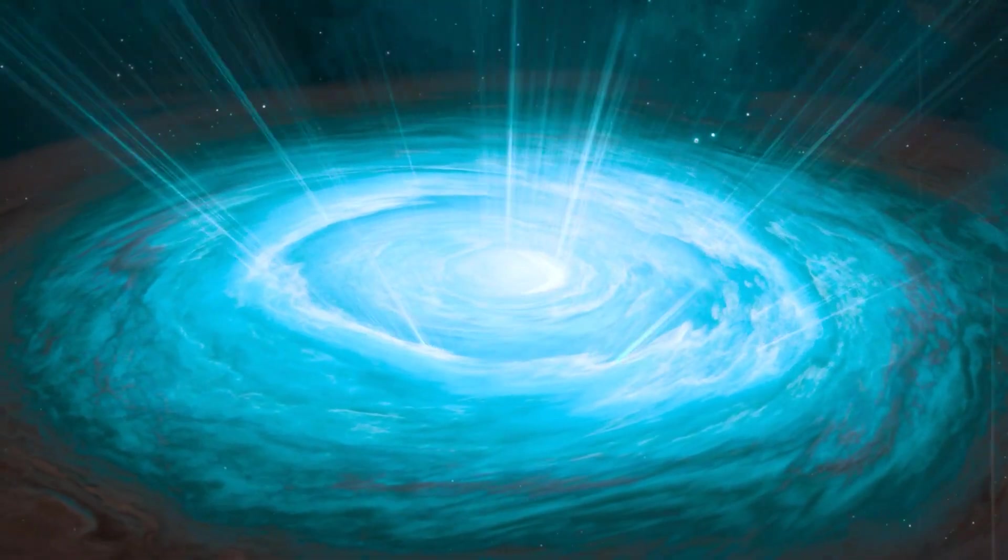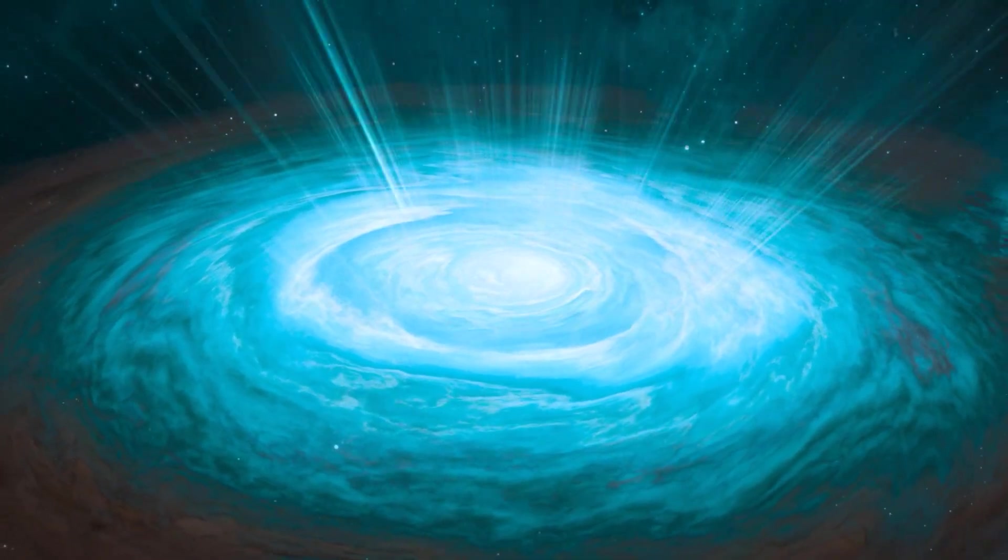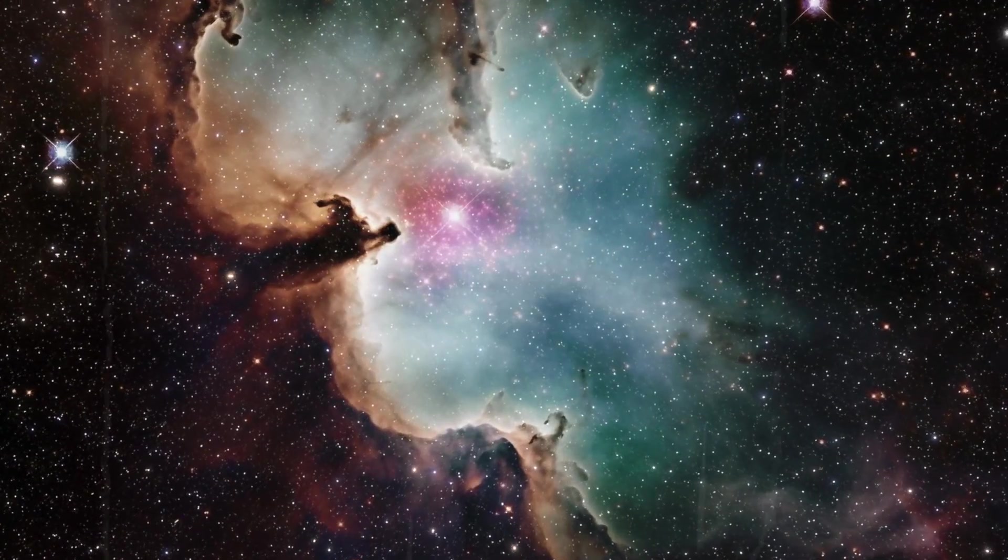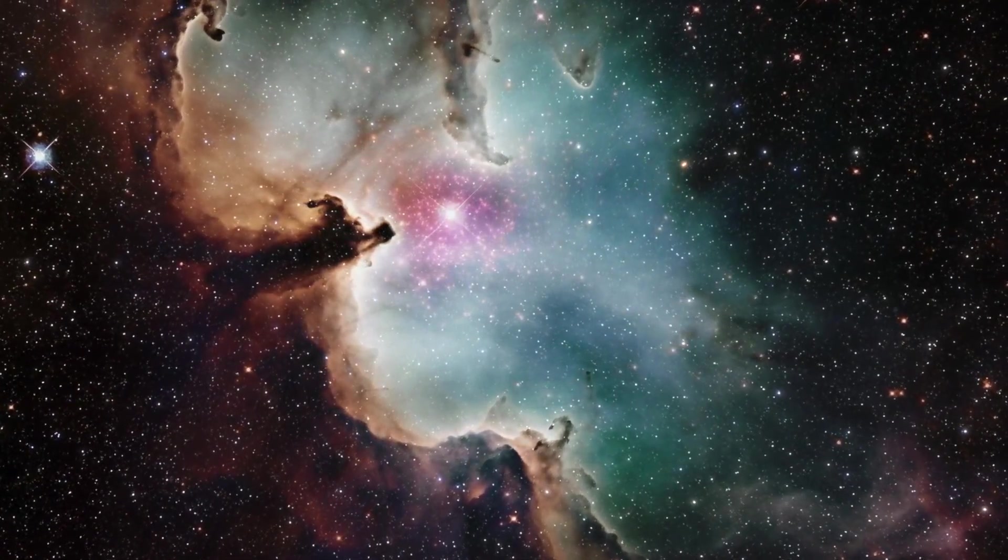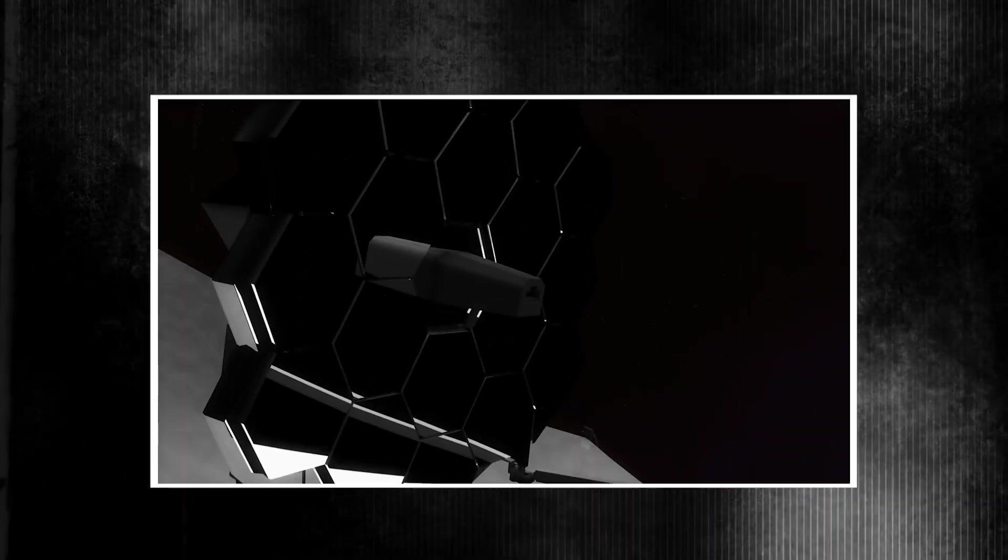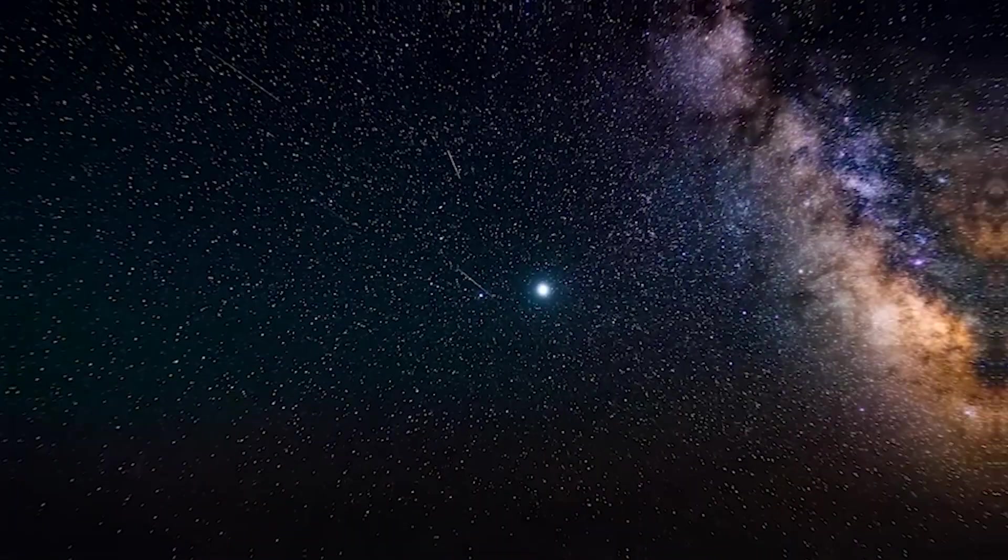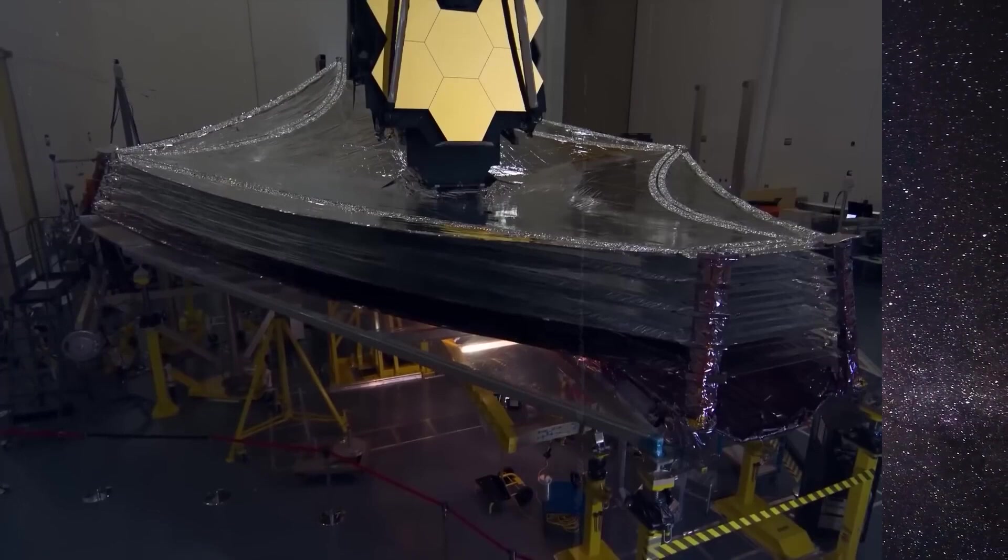Accompanying this is a sunshield, roughly the size of a tennis court, constructed from heat-resistant kapton layers. This shield reduces solar radiation, maintaining cryogenic temperatures critical for JWST's instruments. Among these instruments is the Near Infrared Camera, NIRCam, which captures the faint light of distant galaxies and includes coronagraphs for studying exoplanets. The Near Infrared Spectrograph features a micro-shutter array, allowing simultaneous observation of up to 100 celestial objects and enabling detailed analyses of their composition and motion.